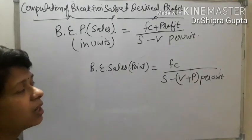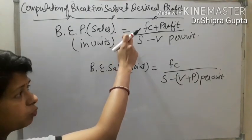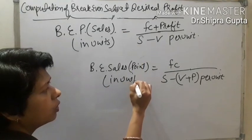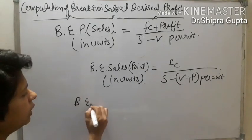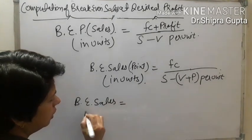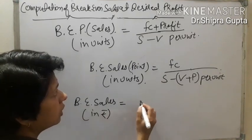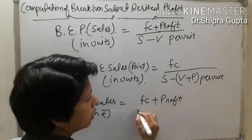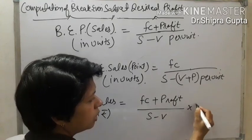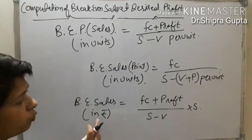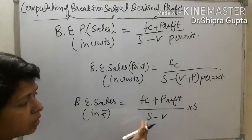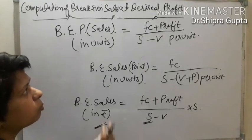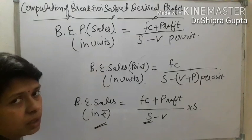So, if profit is given in lump sum amount, we apply the lump sum formula. But if profit is given per unit, we apply the per-unit formula in terms of units. And if we need to calculate break-even sales in rupees, the formula is: (Fixed Cost + Profit) / (S − V) × S. We apply this only in rupees terms when sales and variable cost are given as lump sum amounts.